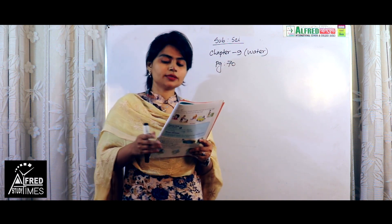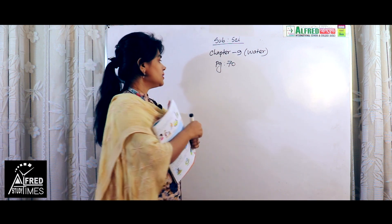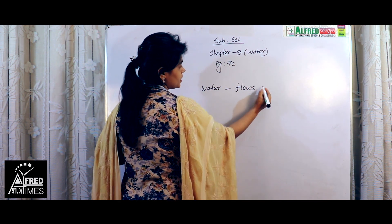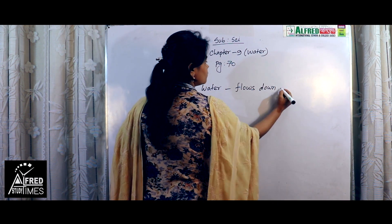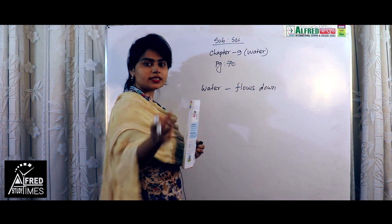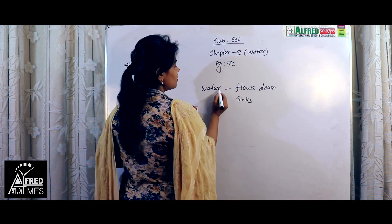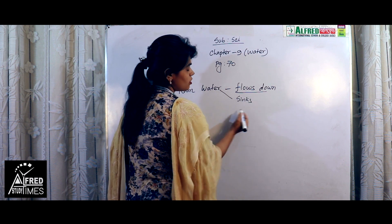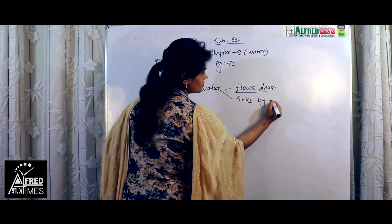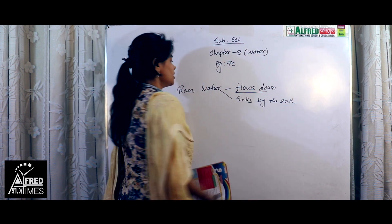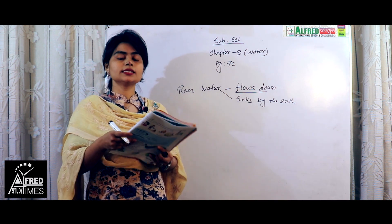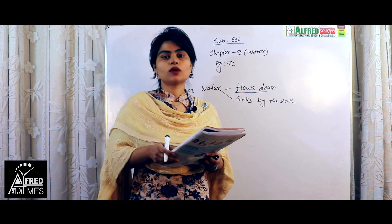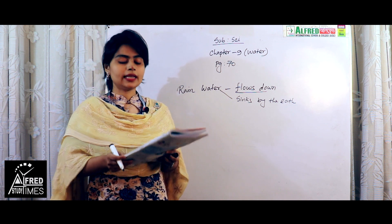Puddles don't stay for a long time because water easily flows down from one place to another place, and some water is soaked and sinks into the earth. Rainwater when it comes to the earth either flows to another place or sinks into the earth. That's why if it forms puddles or any other streams, it doesn't stay for a long time. But in some places we can easily see water, like ponds, lakes and rivers.